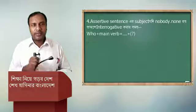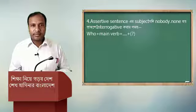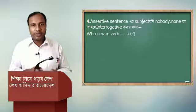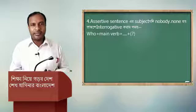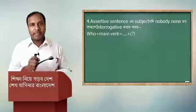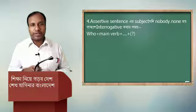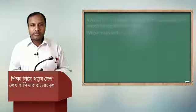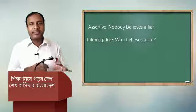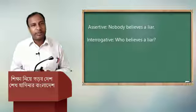Point four: if the subject of an assertive sentence is 'nobody' or 'none', then when making it interrogative, the formula is: who + main verb + ... + question mark. For example: 'Nobody believes a liar.' The interrogative sentence will be: 'Who believes a liar?'